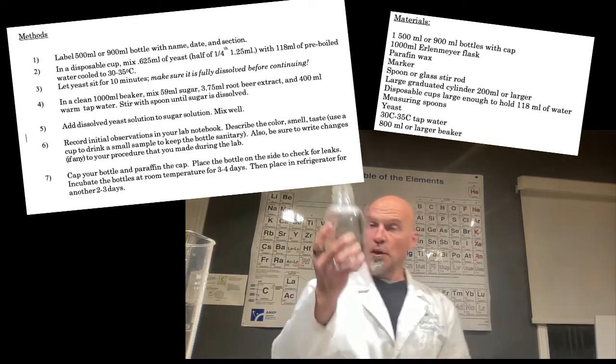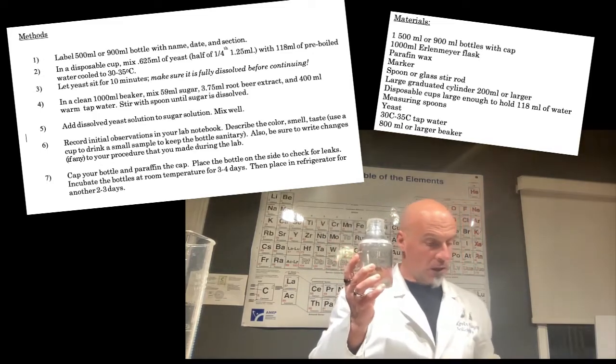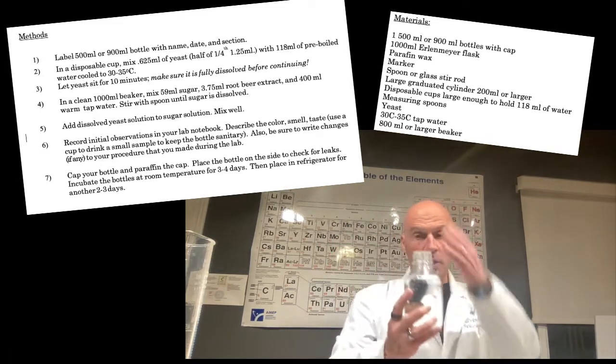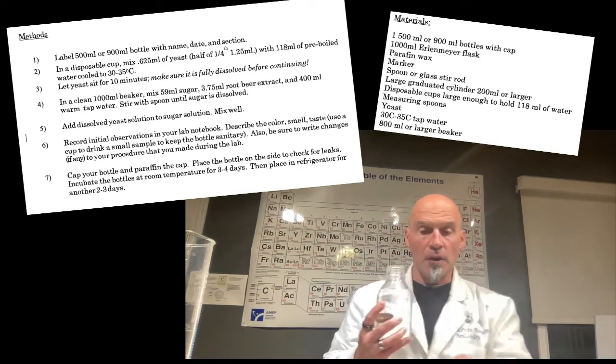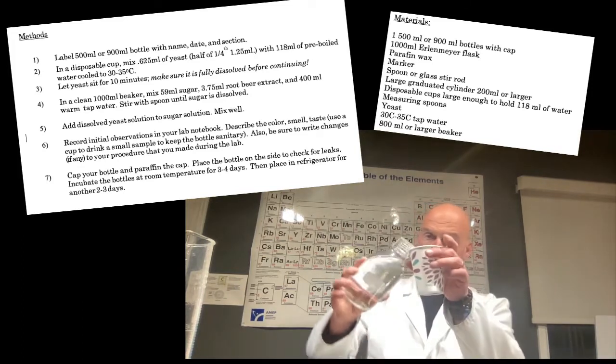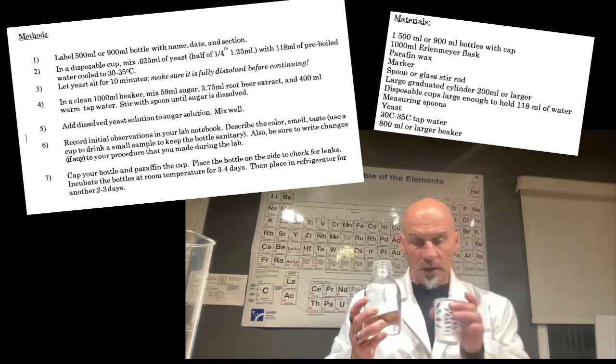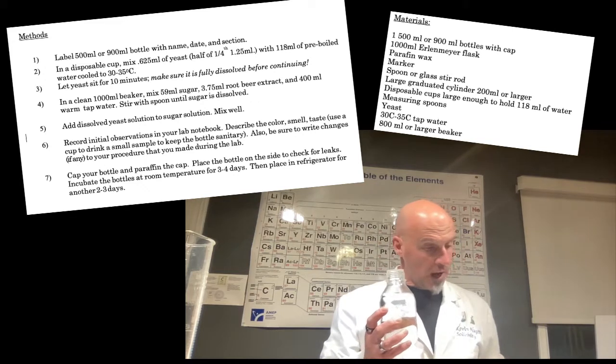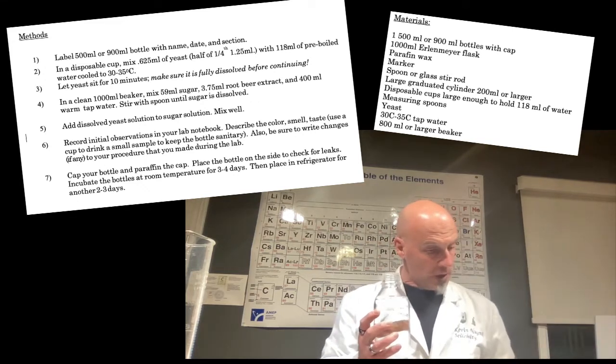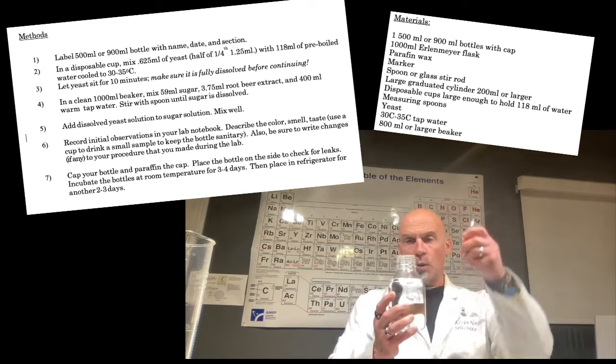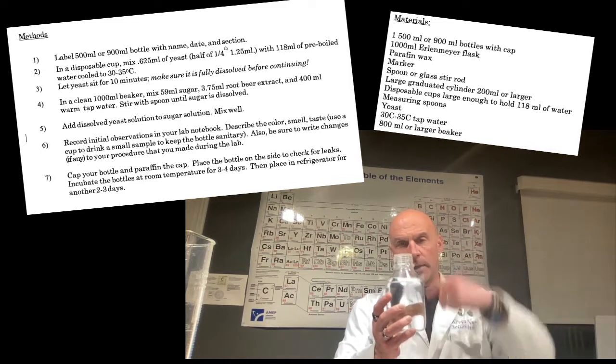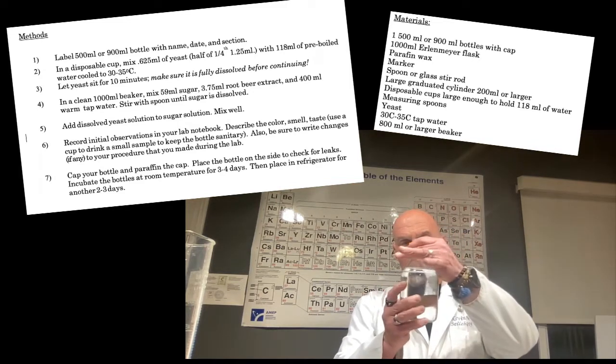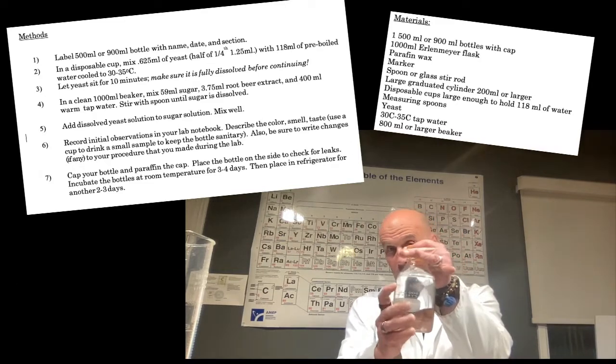Okay. And then, what you're going to do is, in your lab manual, you're going to go ahead and take note of the color, take note of the way it smells. And you're also going to go ahead and pour a little bit into your disposable cup and drink it to see the taste. Mark your reflections in the lab manual. And then, we paraffin wax the cap. Put the lid on snug. Nice and tight.